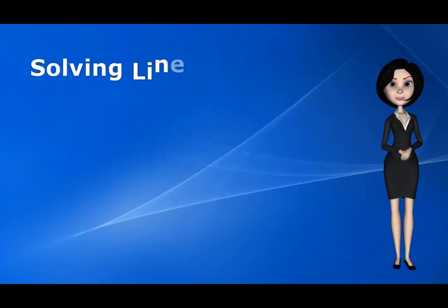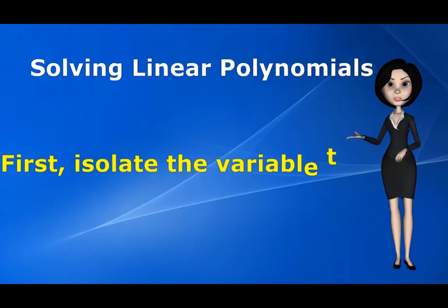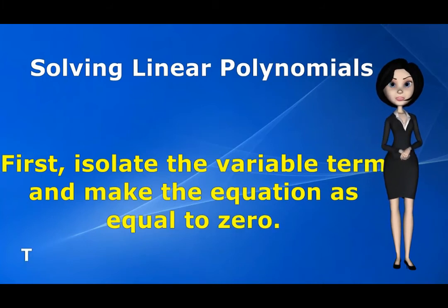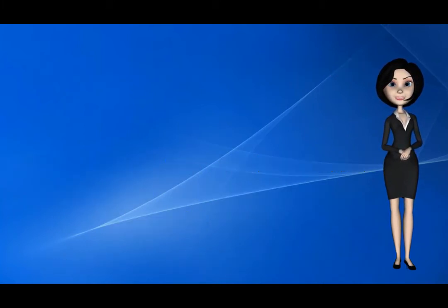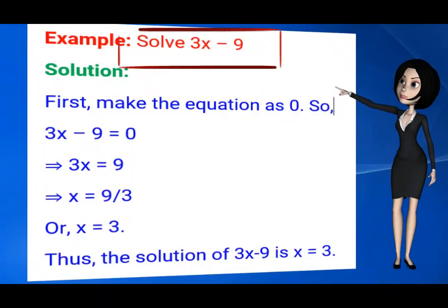Let us see how to solve linear polynomials. Getting the solution of linear polynomials is easy and simple. First, isolate the variable term and make the equation equal to zero. Then solve as basic algebra operation. Let us see an example. Here you see how to solve 3x minus 9.